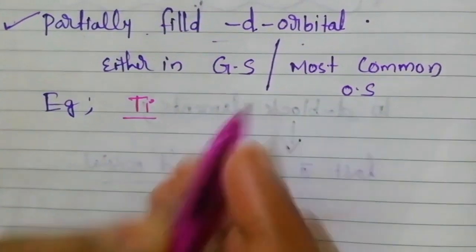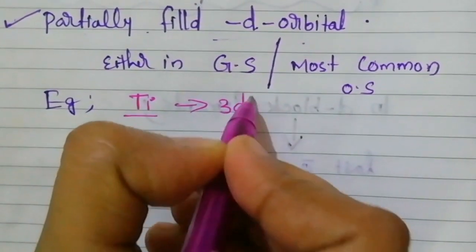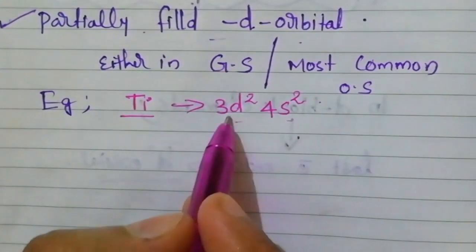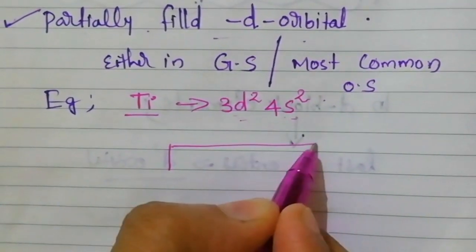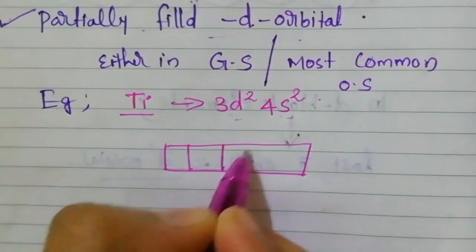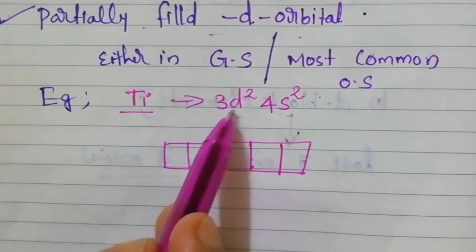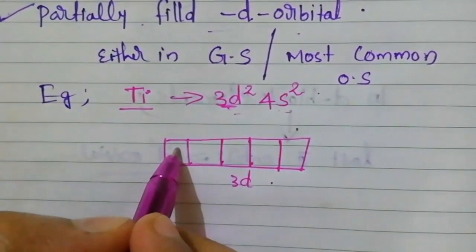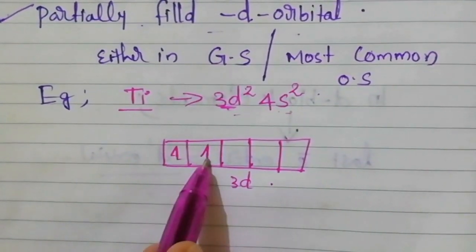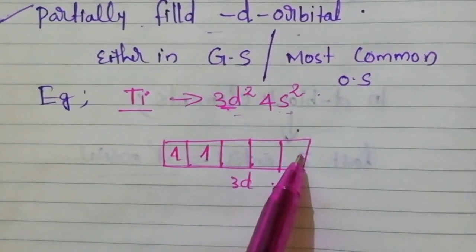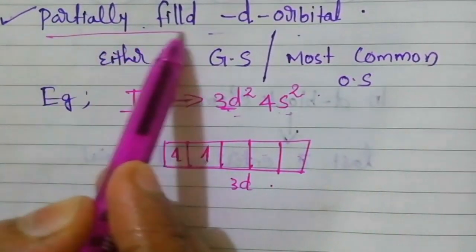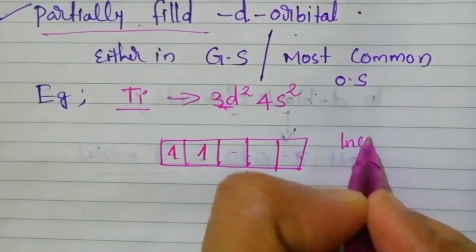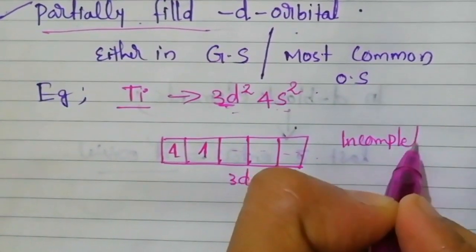For example, consider titanium. Its outer electronic configuration is 3D² 4S². In the 3D orbital, titanium has only 2 electrons distributed across the 5 D orbitals, leaving the remaining orbitals vacant. That means it consists of a partially or incompletely filled D orbital, and that is why titanium is considered a transition element.